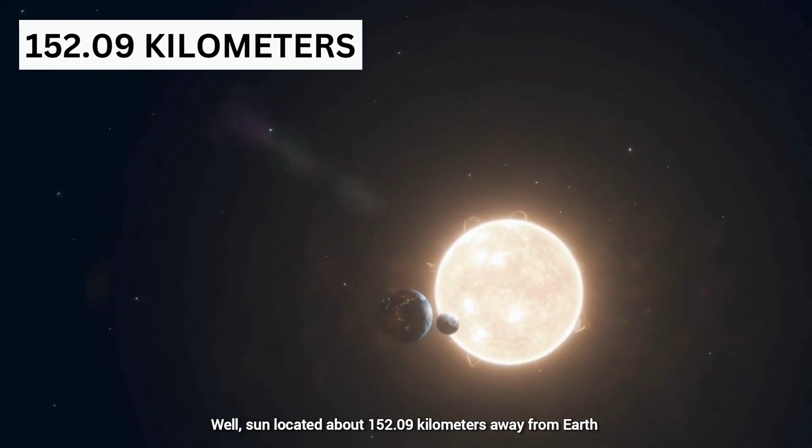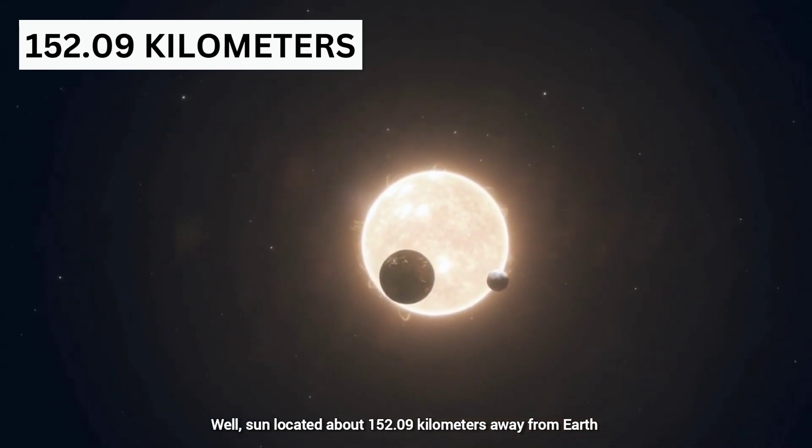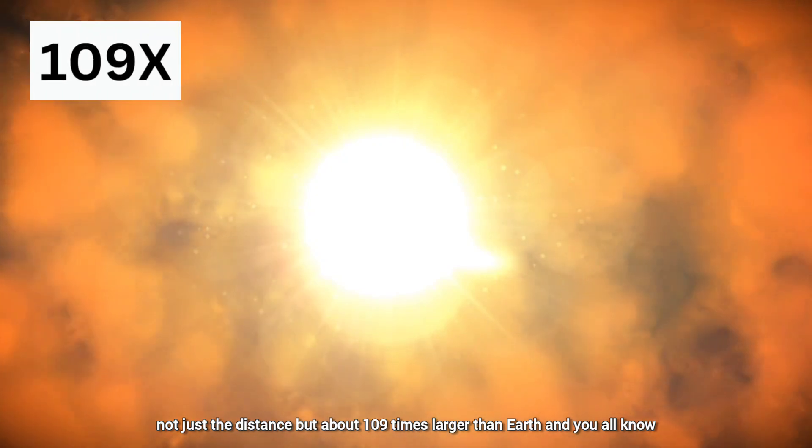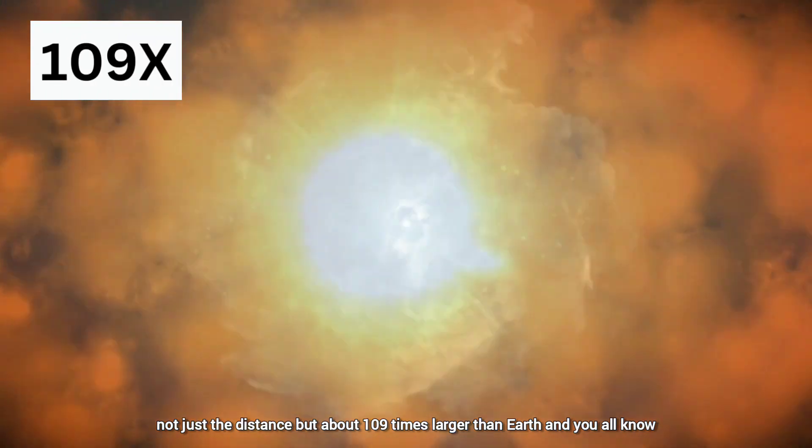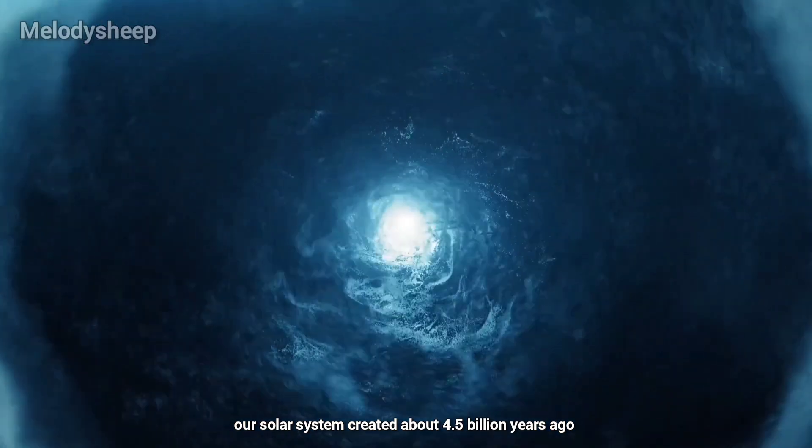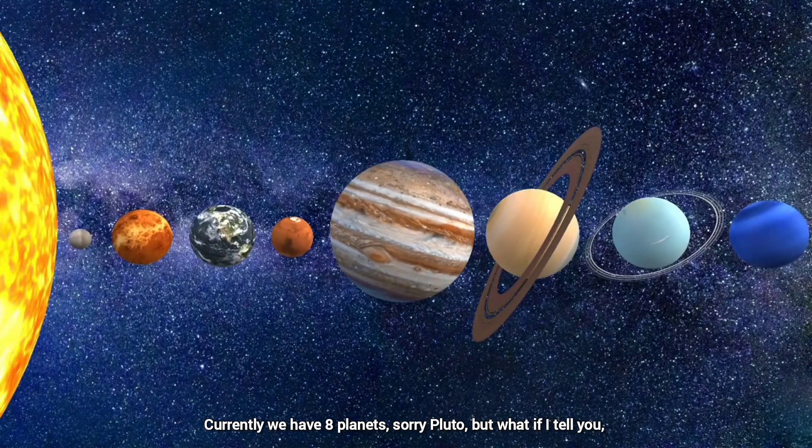The Sun is located about 152.09 kilometers away from Earth, not just a distance but about 109 times larger than Earth. And you all know, our solar system was created about 4.5 billion years ago. Currently we have 8 planets. Sorry Pluto.